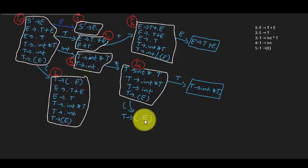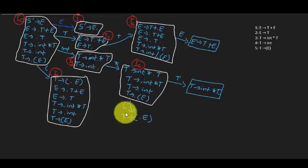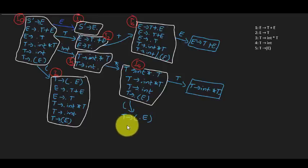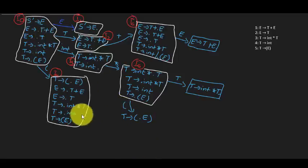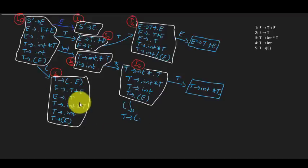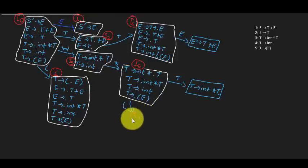On input open parenthesis, we get T → (•E. With a dot before E, we apply closure and bring all the rules of E and then T. If you notice, this looks similar to an already-computed state — we don't need to recompute. We simply point to state I4, avoiding unnecessary recomputation.